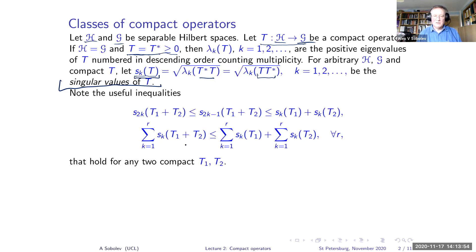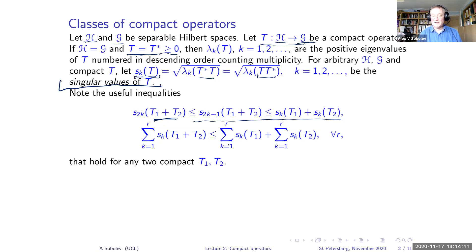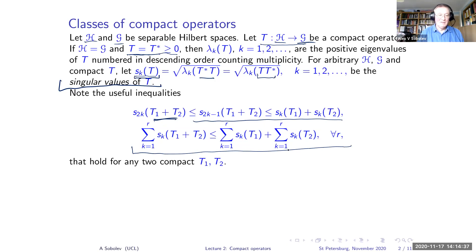Some useful inequalities for singular values: for the sum of two operators we have a key inequality. This is very useful and holds for all r — you can even take r infinite, provided the right-hand side is finite, meaning the operators belong to the trace class. This holds for any compact T₁ and T₂.